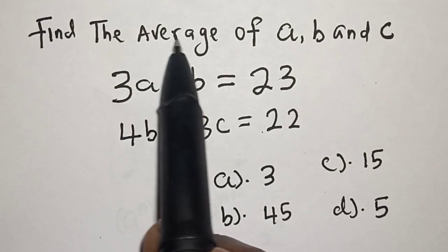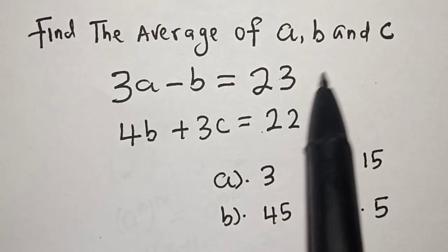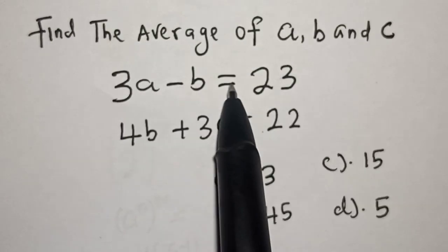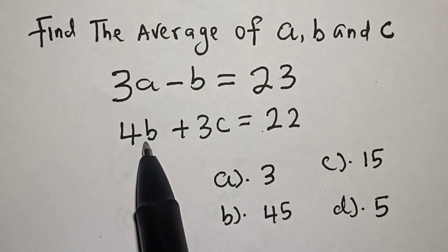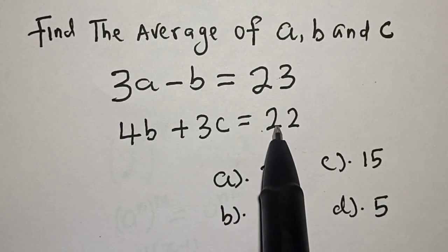Find the average of A, B, and C. 3A minus B is equal to 23, then 4B plus 3C is equal to 22.